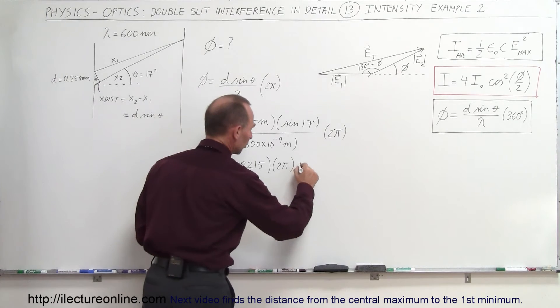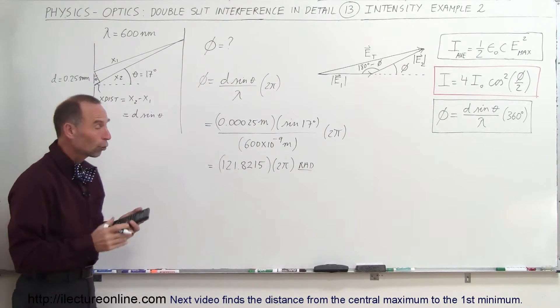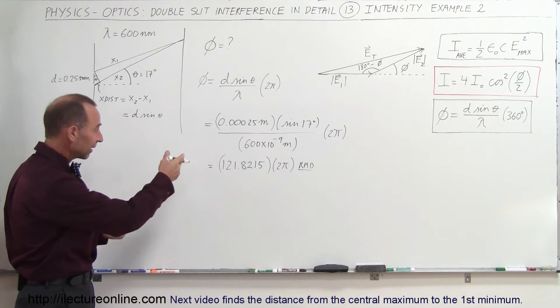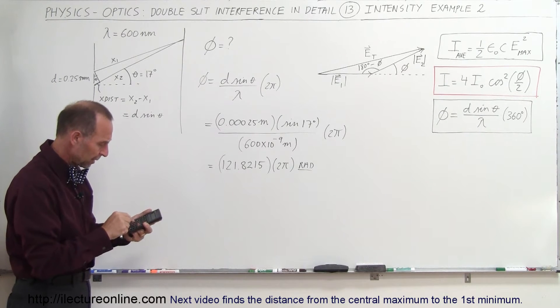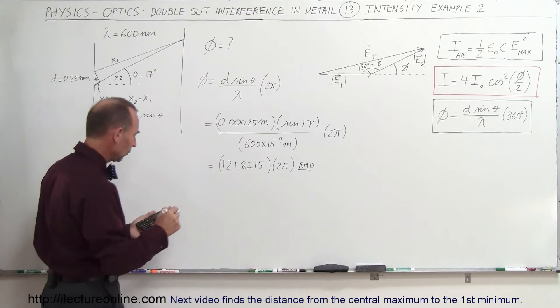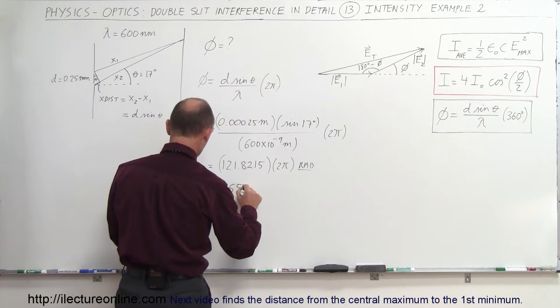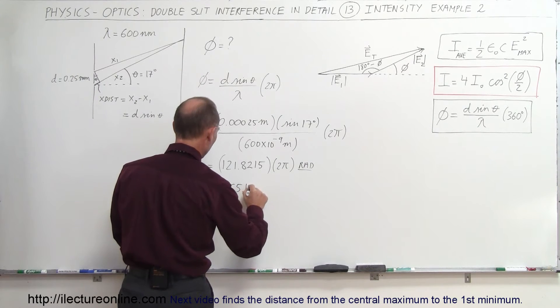Times 2 pi radians. Of course, units here would be radians. We don't have to write it, but it's understood to be radians. So the total phase difference would be 2 pi times that number, that would be times 2 times pi equals, that would be 765.4 radians.